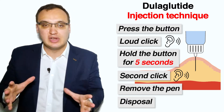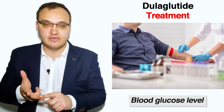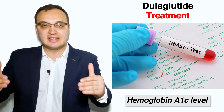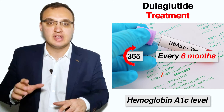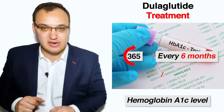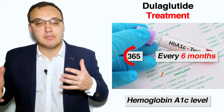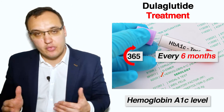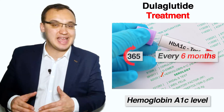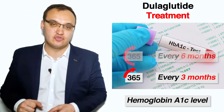While taking dulaglutide, you must regularly check your body weight, heart rate, and blood glucose levels. Additionally, we check the hemoglobin A1c about every six months — or twice yearly — in patients who have stable disease and are meeting treatment goals. However, it can be reviewed more regularly, such as every three months, in patients who are not meeting treatment goals.